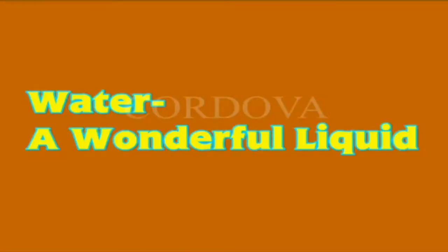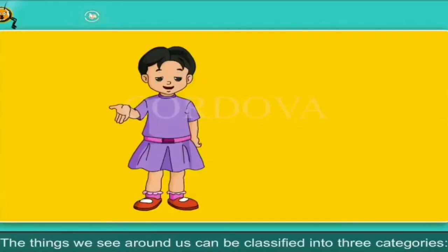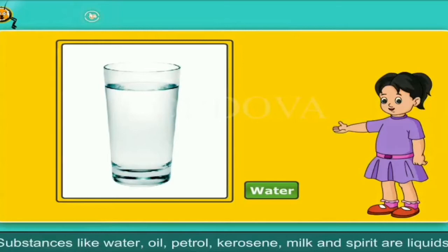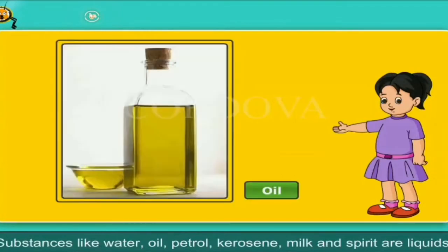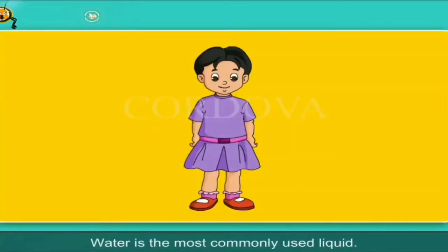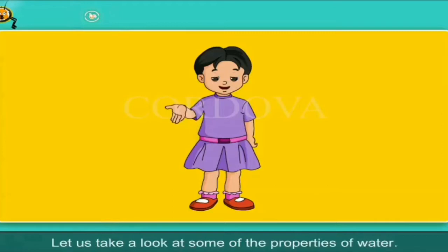Water — a wonderful liquid. The things we see around us can be classified into three categories: 1. Solids, 2. Liquids, 3. Gases. Substances like water, oil, petrol, kerosene, milk and spirit are liquids. Water is the most commonly used liquid. Let us take a look at some of the properties of water.